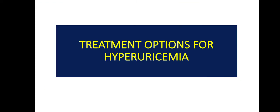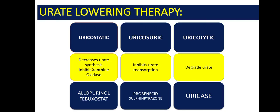Now, what are the treatment options for hyperuricemia? They are broadly categorized into three types of therapy. The first is uricostatic, which inhibits xanthine oxidase — the enzyme that leads to uric acid formation — for example, allopurinol and febuxostat. The second is uricosuric, which inhibits uric acid reabsorption — for example, probenecid and sulfinpyrazone. And the third is uricolytic, which degrades uric acid — for example, uricase. The first choice uric acid-lowering agent is the xanthine oxidase inhibitor.